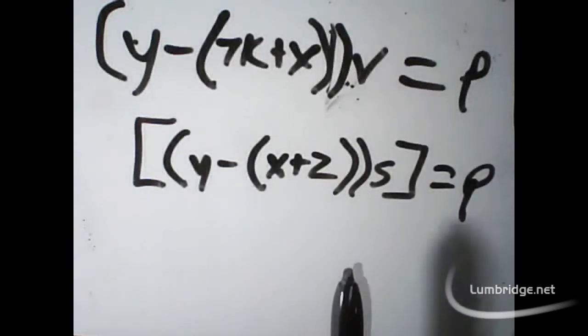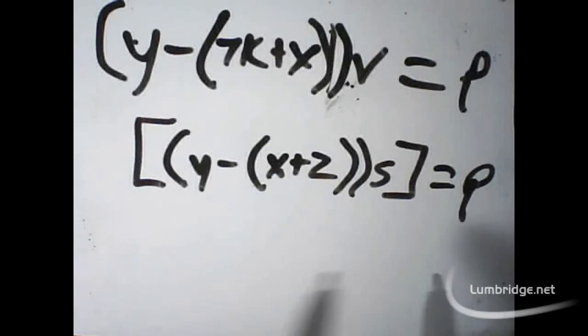And we're going to have them both equal p. What this equation solves is how to get how many battle staffs you can buy, and air orbs, to craft into air battle staffs without losing any money.